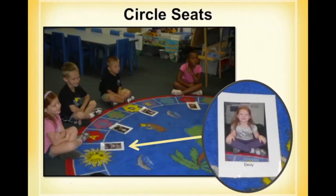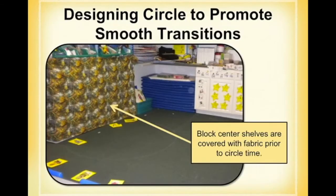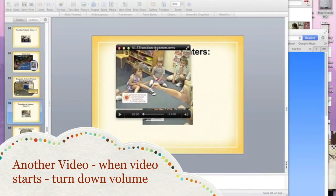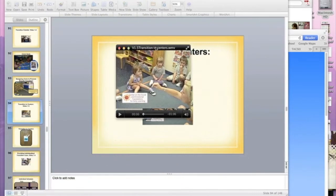Here's another idea where you could have pictures for the students to know where to sit during circle time. Here they were very intelligent by covering up the block area for circle time, so children were not engaged in playing with the blocks during circle time. And we have another video — think about what did the teacher do that supported transition, and what could the teacher do to improve the transition.